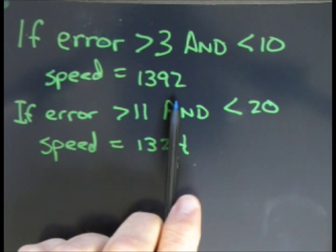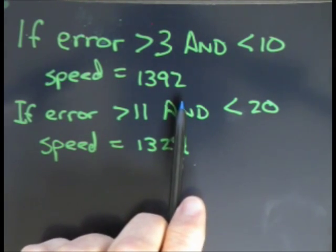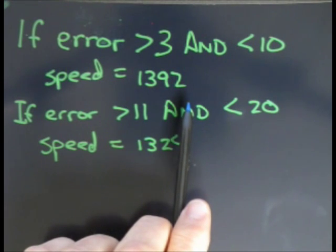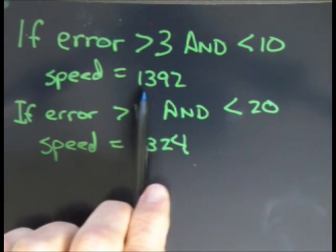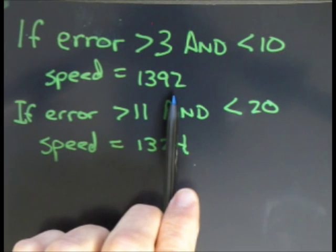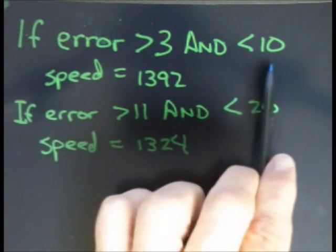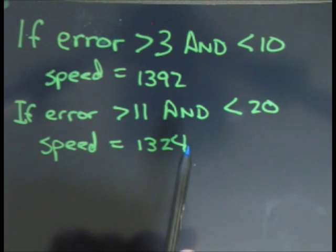I'm using the Parallax HB25s, where a value of 1500 is stop, 1000 is full speed one direction, and 2000 is full speed the other direction. In this case, the value would be relatively close to 1500 because I want it to move slowly—I'm almost at where I need to be.